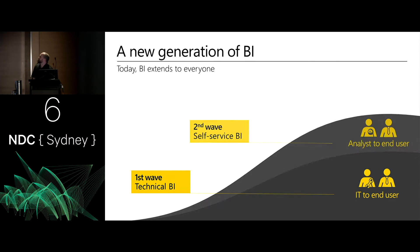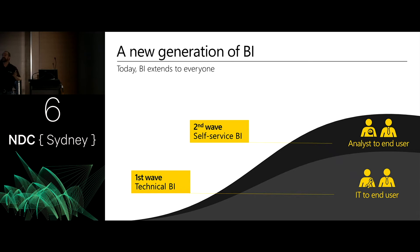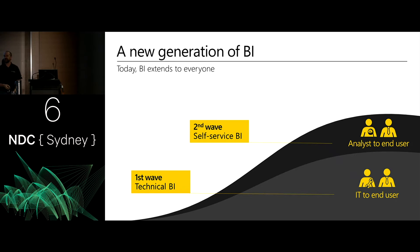We saw wave two come in whereby there was a need to deliver BI directly to users themselves, because corporate BI cannot deliver 100% of business requirements. If it attempted to do so, it would never get out of the gathering-of-requirements phase. Using the 80-20 rule: 80% of the time, corporate BI can deliver the needs of the business, but the other 20% of the time, no. So what did Microsoft deliver several years ago to enable self-service BI within the organization? Power Pivot.